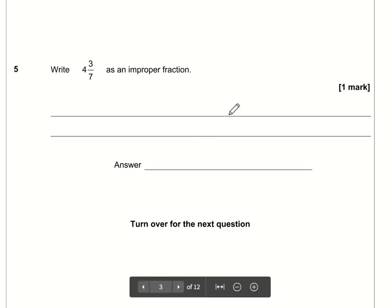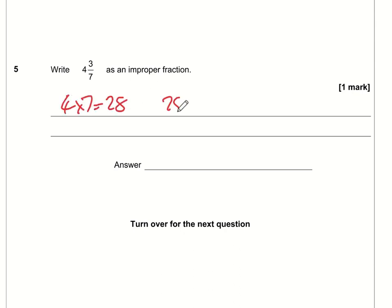Write down four and three sevenths as an improper fraction. So how many sevenths is four and three sevenths? We're turning this into a top heavy fraction where the number on the top is bigger than the number on the bottom. To work this out it's going to be four times seven plus three. Four times seven is 28, 28 plus the three is 31. So the answer is 31 over seven.